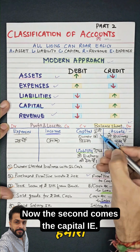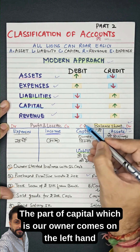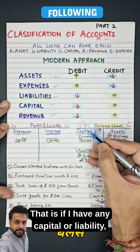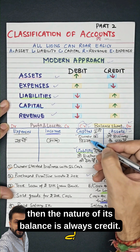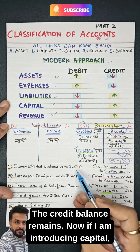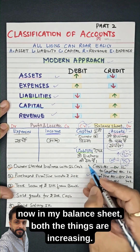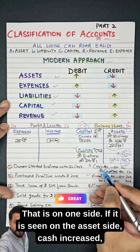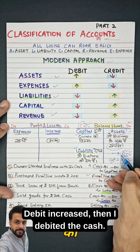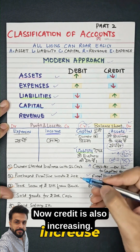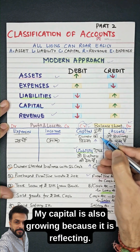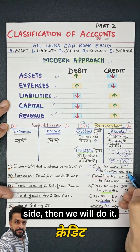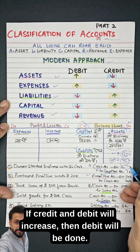The second is capital — the owner's portion — which comes on the left hand side of the balance sheet as the credit balance. If I have any capital or liability, the nature of its balance is always credit. Now, if I am introducing capital, both things are increasing in my balance sheet. On the asset side, cash increased — I brought cash into the business, so I debited the cash. Credit is also increasing; my capital is also growing. If credit increases on the liability side, we credit it; if debit increases, we debit it.